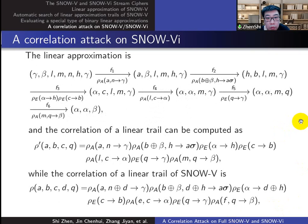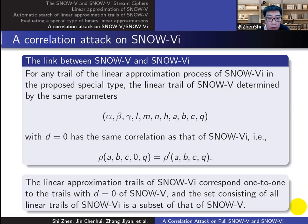Using the same method, we can get the linear approximation process of it and the correlations of linear trails. Compared with the trails of SNOW-5, we have the observation that the linear approximation trails of SNOW-6 correspond 1 to 1 to the trails with d equals 0 of SNOW-5. And this observation indicates the set consisting of all linear trails of SNOW-6 is a subset of that of SNOW-5.